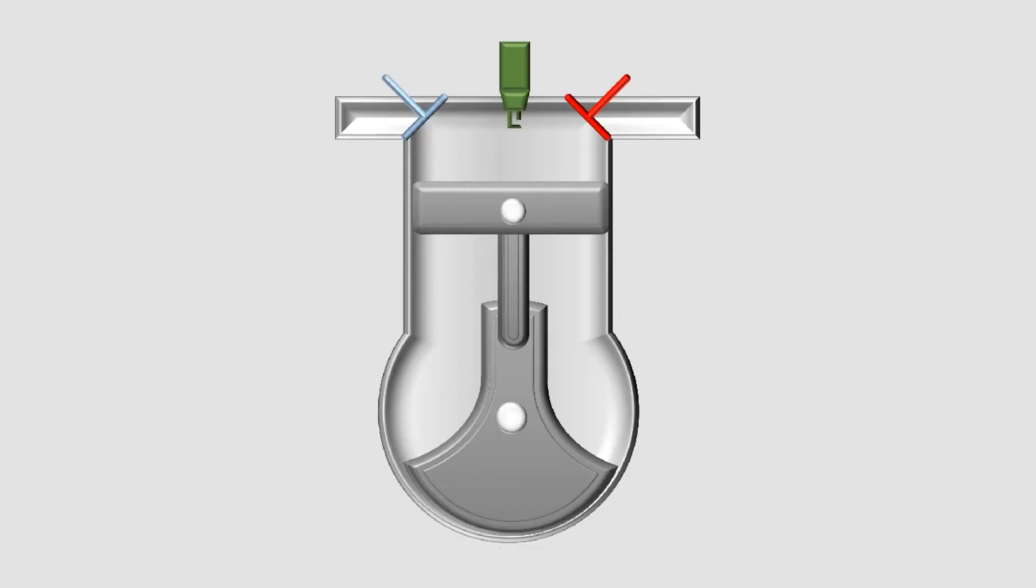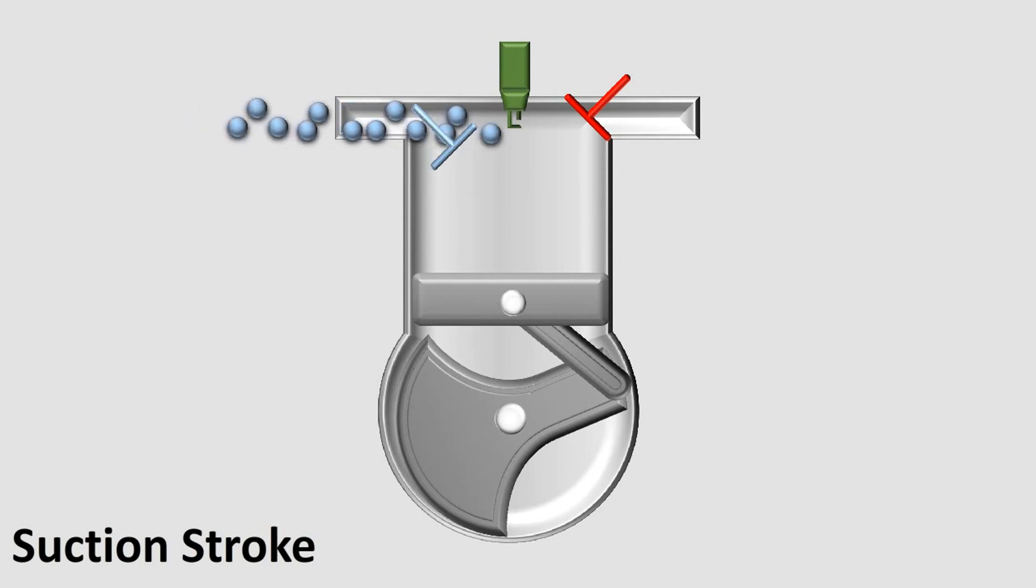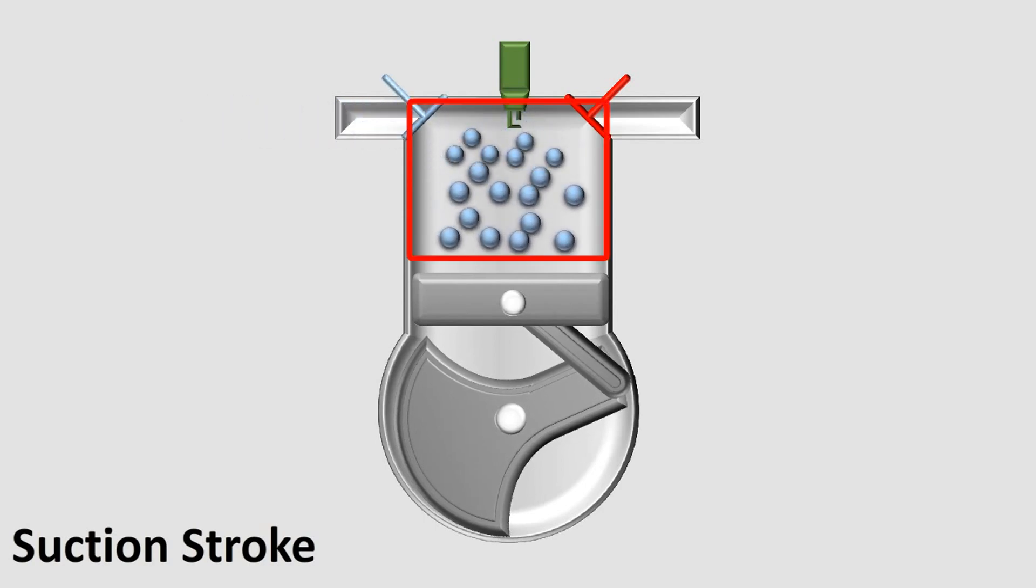All the air you have to burn the fuel comes from the suction stroke. The intake valve opens, the piston moves down. The air gets sucked into the combustion chamber. The valve closes. Now, the air you have in the combustion chamber is what you have to burn the fuel.